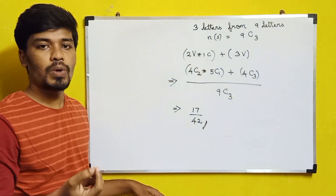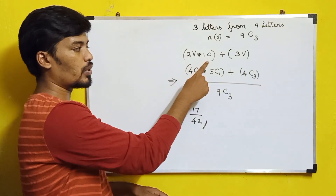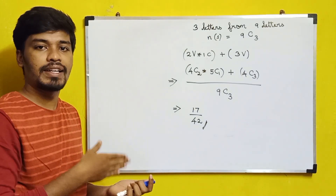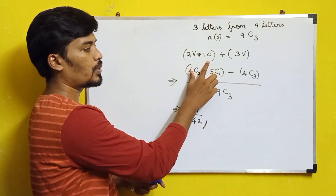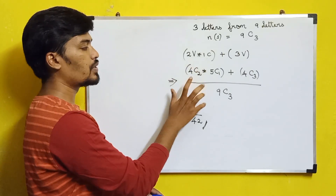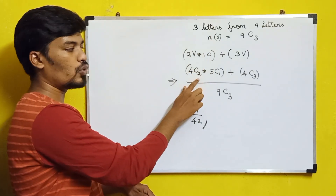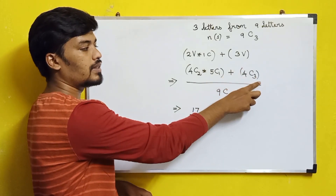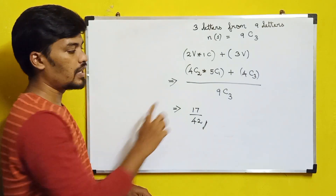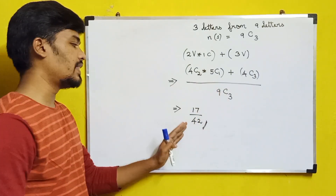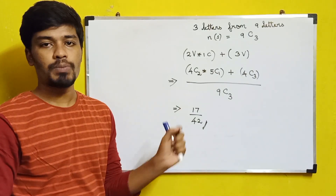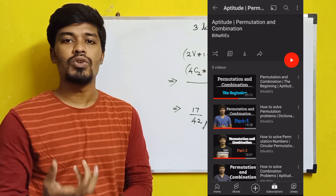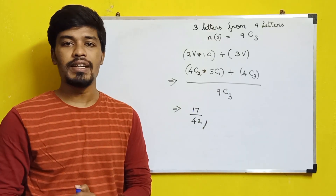More than one vowel means the conditions are: two vowels and one consonant, or three vowels. The number of favorable events is: (4C2 × 5C1) + (4C3) — selecting 2 vowels from 4 and 1 consonant from 5, plus selecting 3 vowels from 4. Dividing by the total sample space (9C3), you get the answer as 17/42. For help with permutation and combination, I have posted a video on this channel — the link is in the description.